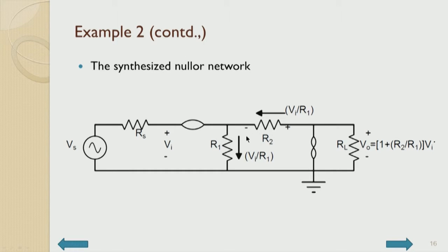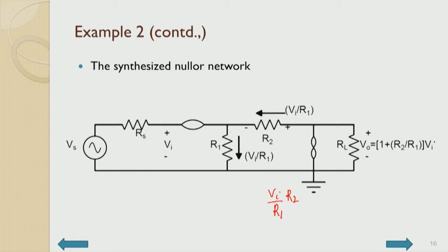This current cannot flow through the nullator, so it flows through another path where resistance R2 is placed in series, boosting the output voltage. The current is also VI/R1, and the drop across R2 is (VI/R1)×R2. The net voltage V-naught between the two output terminals is VI plus (VI/R1)×R2, which equals (1 + R2/R1)×VI. So the output voltage has been boosted by a factor of 1 + R2/R1, which is the gain of the stage.